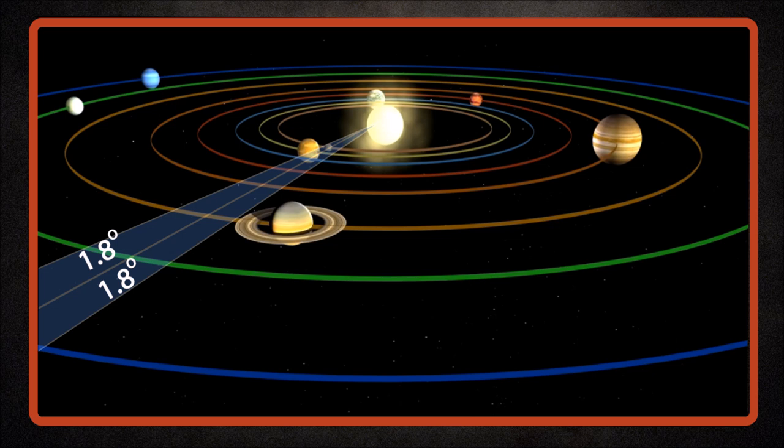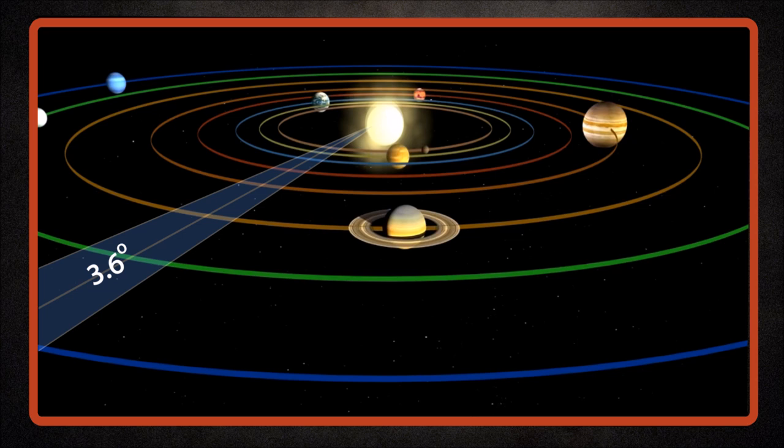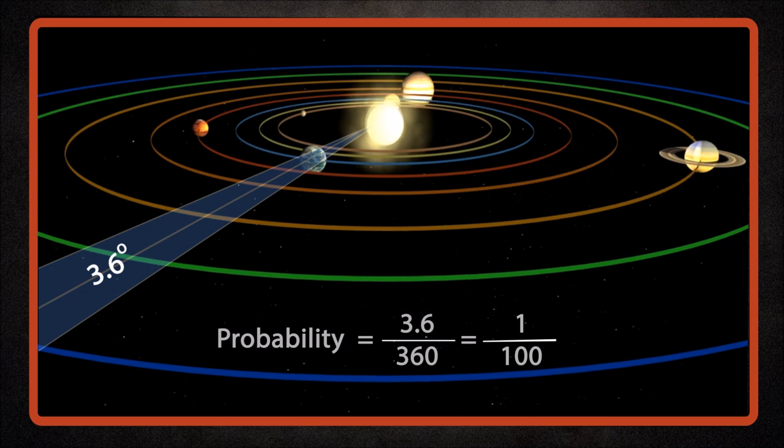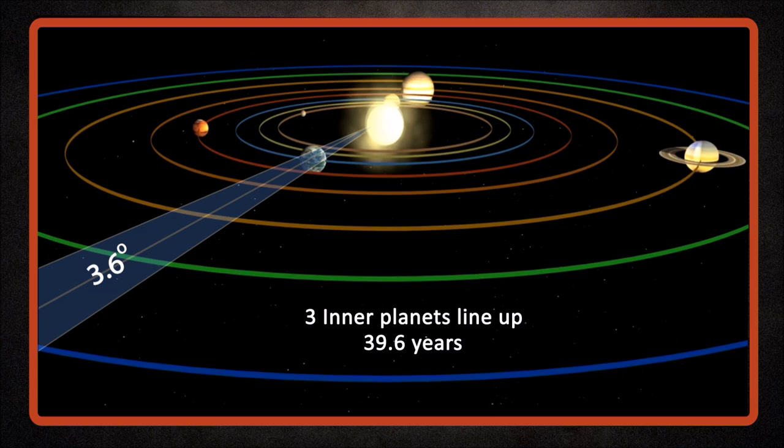Now Mercury and Venus come within a 3.6 degree arc once every 0.396 years. So on any given pass, the chance that Earth will also be within that 3.6 degree arc is given by 3.6 degrees divided by 360 degrees, that is 1 in 100. So on average, all these 3 inner planets line up every 39.6 years.